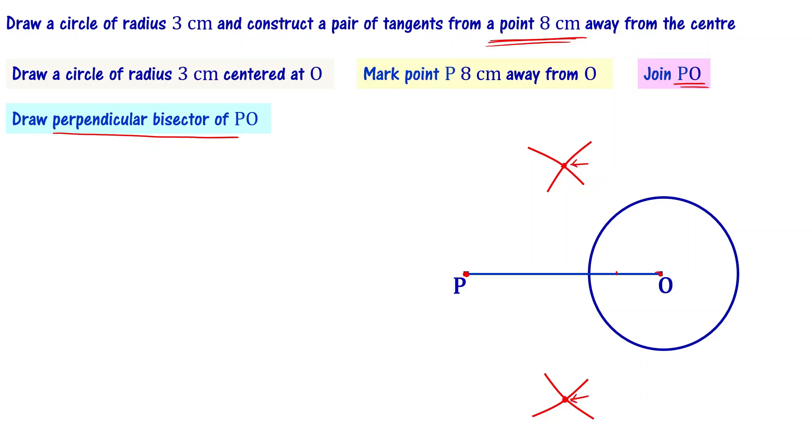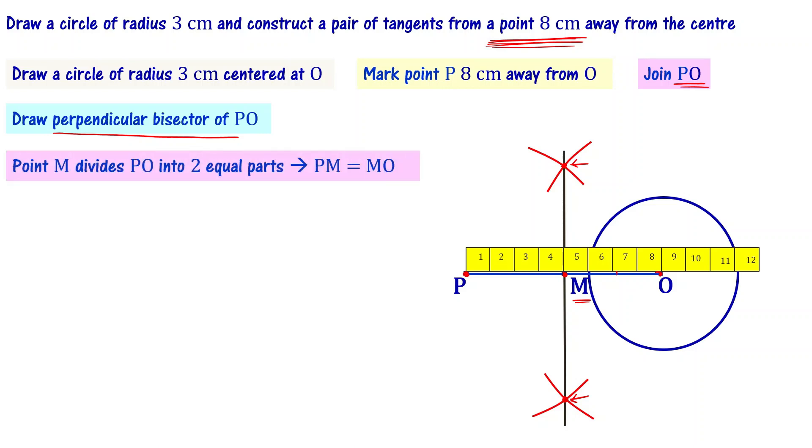Let me connect these two points using a straight line. Point M is the bisecting point. So we can now say that if you check with the scale, PM is 4 centimeters and MO is 4 centimeters. So 8 centimeters is equally divided. Point M divides PO into two equal parts, that's why we can say that PM equal to MO.